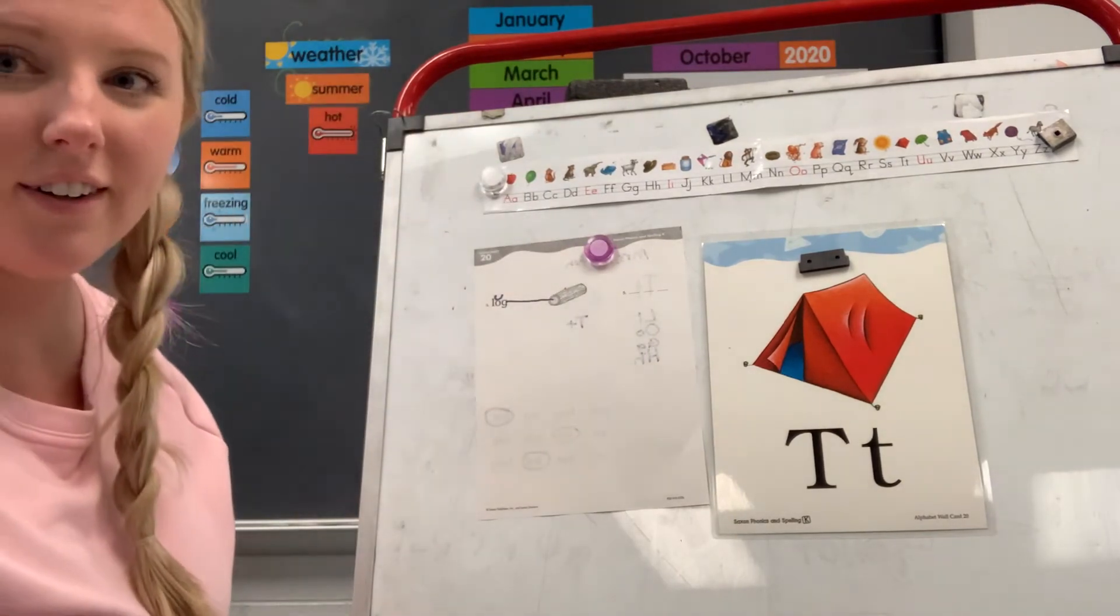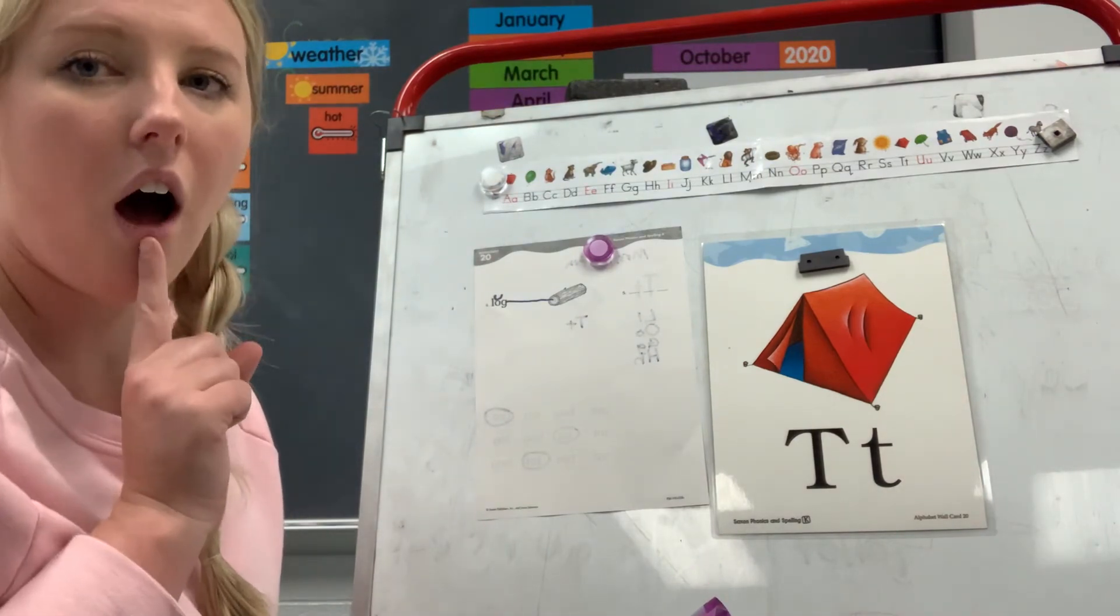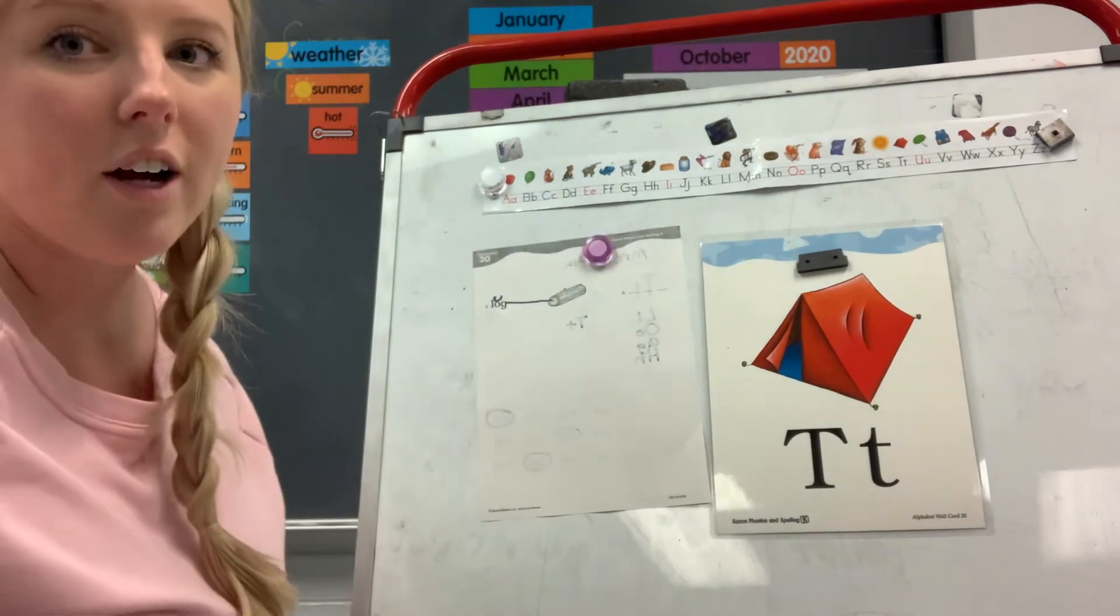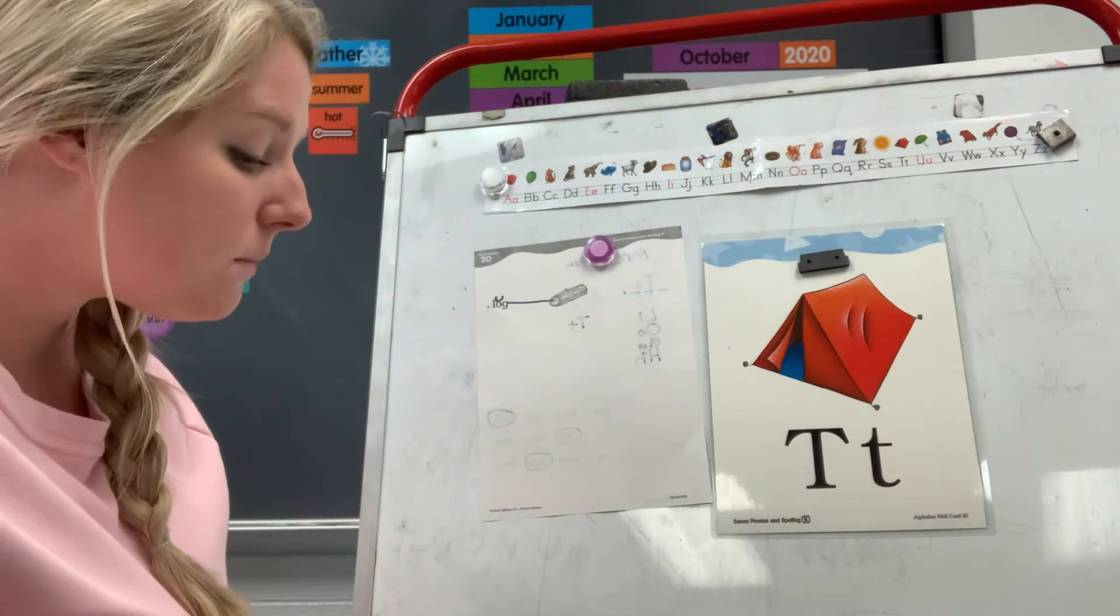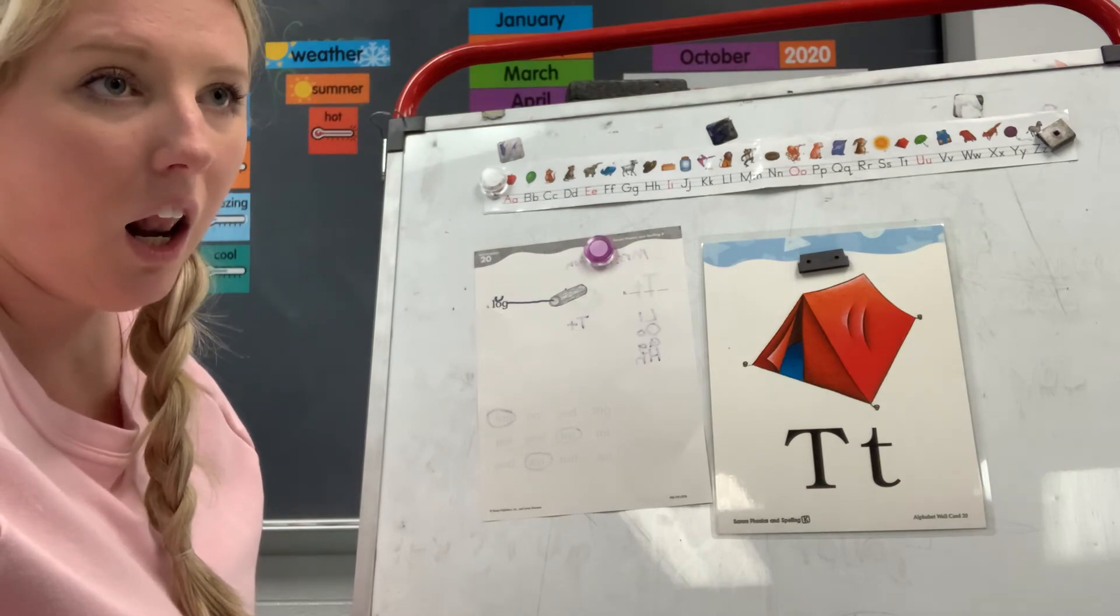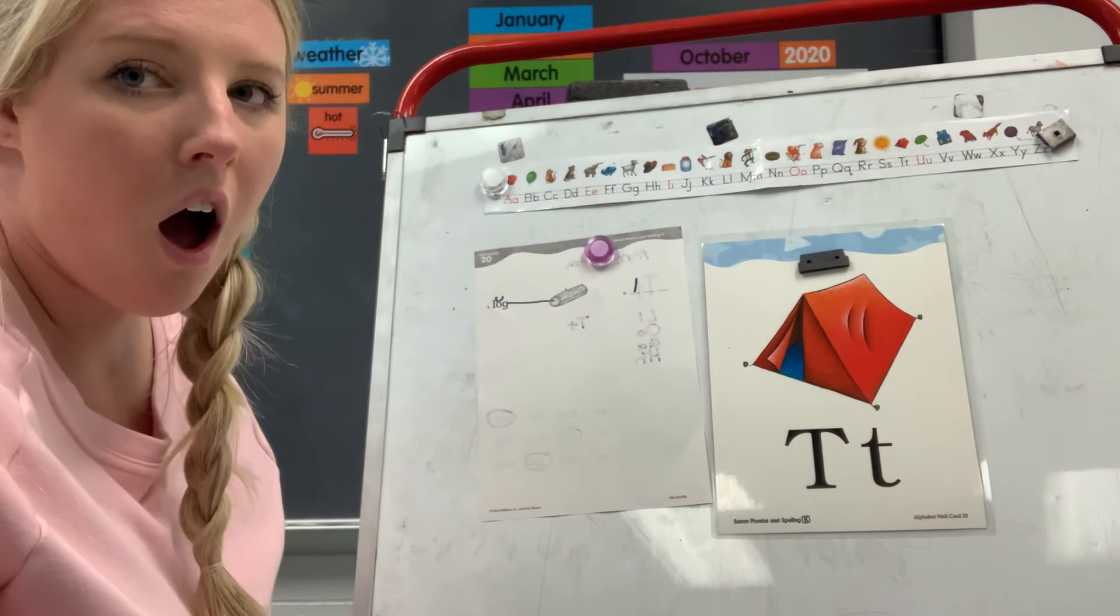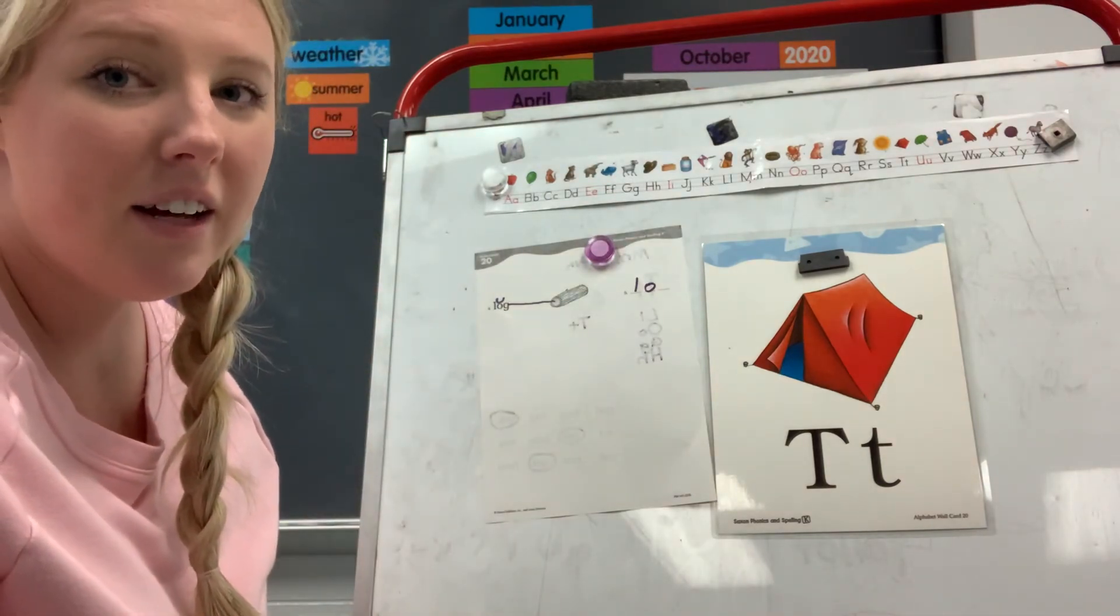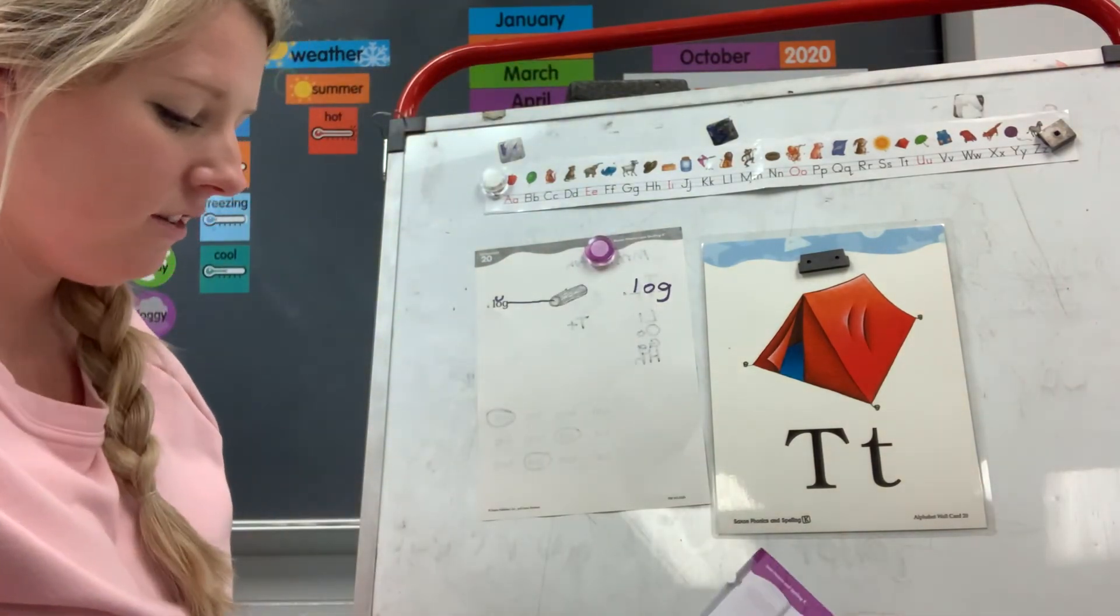Now point to number five. We're going to take a spelling test. Echo this word, log. Can you spell log on number five? Now don't cheat, don't look at number four. Spell the word log by yourself on number five. Okay, let's spell it one sound at a time. What do you hear at the beginning of log? Log. Oh, what letter says L? L, L. Good job, L. Okay, oh, what letter says oh? O. G, G. Good job. So you should have L-O-G. Check your paper. Kiss your brain.